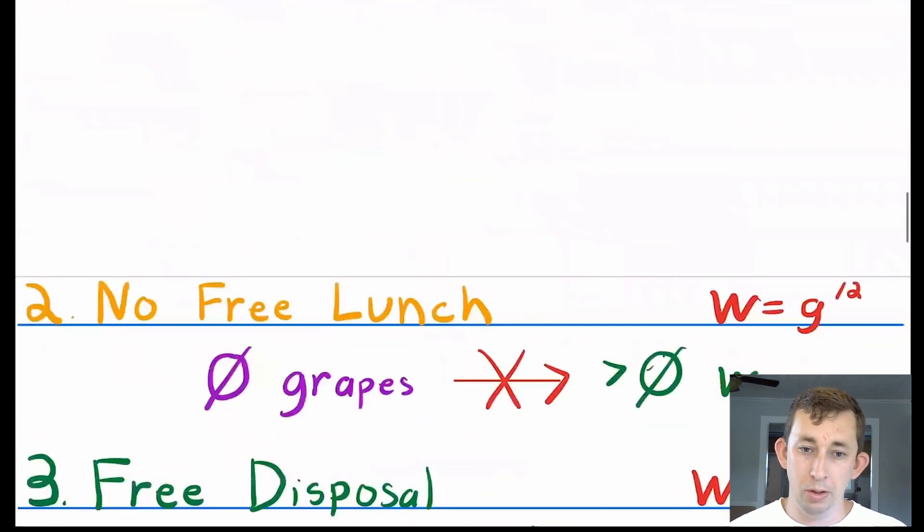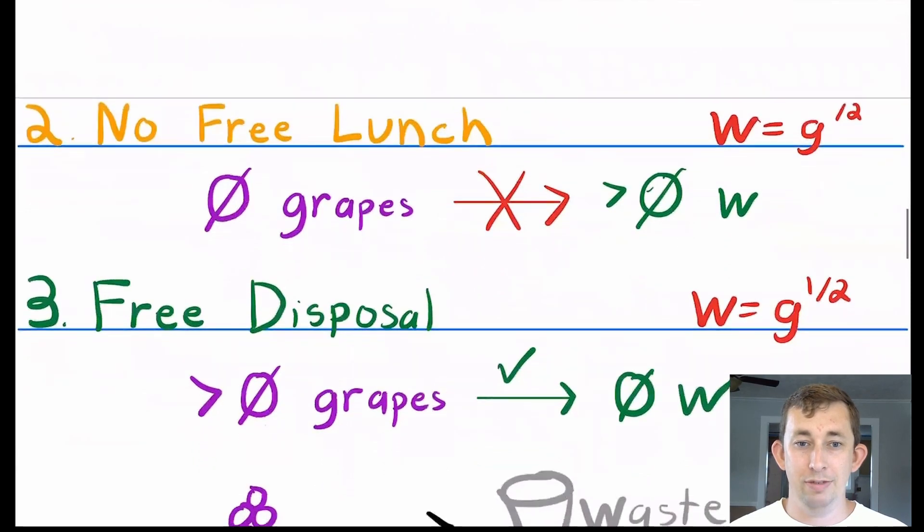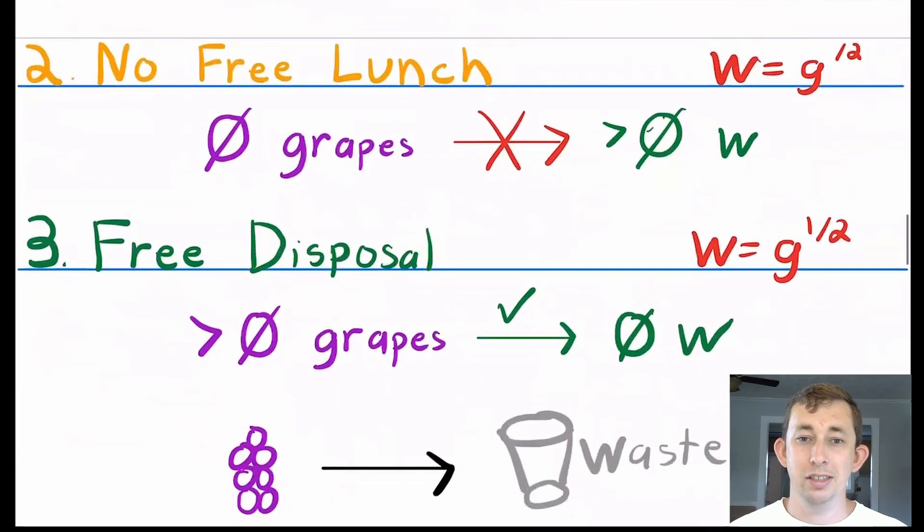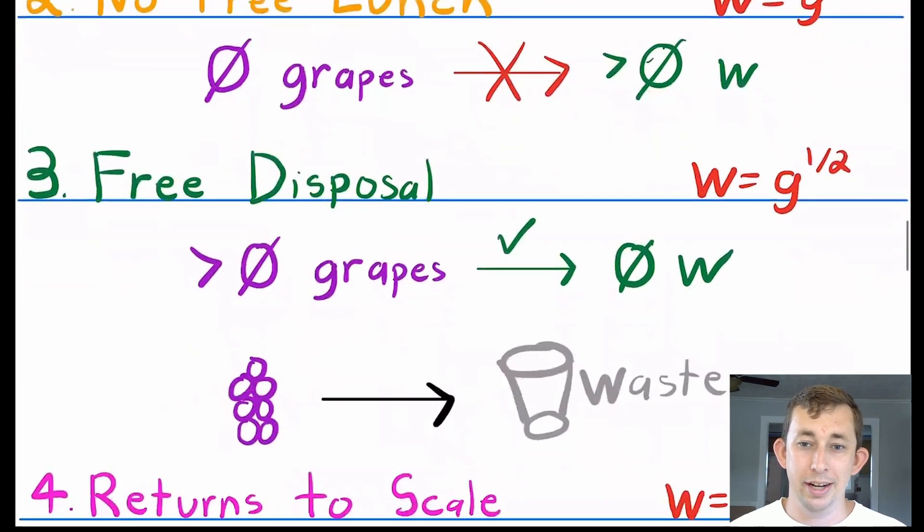The second property of a production function is no free lunch. That just means you can't expect bottles of W to come out of your machine for free. So you can't put zero grapes into our production function and expect to get anything out of it. If you put zero grapes in, you're going to get zero W out. That's what it means for no free lunch. I also call this no magic. You can't make things out of thin air.